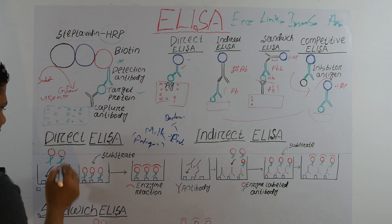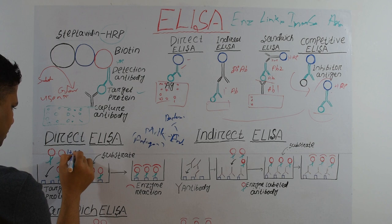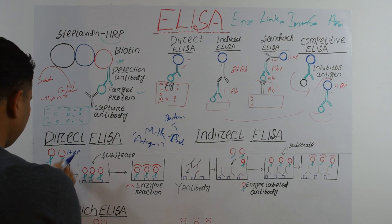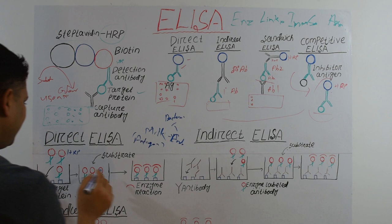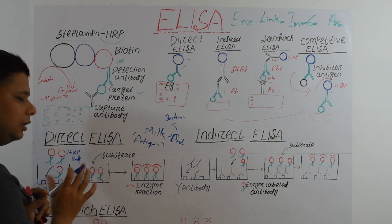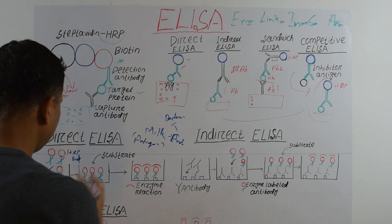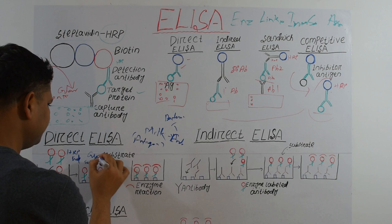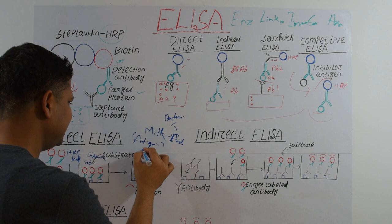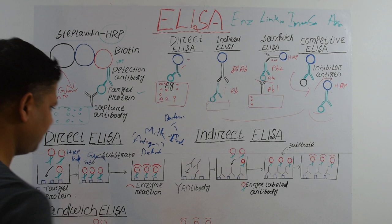The HRP-conjugated antibody binds to the antigen. Then we do a second wash to remove all unbound antibodies. After that, we add the luminol substrate. Because HRP is present, the enzyme reaction occurs and we can detect the glow using a plate reader.